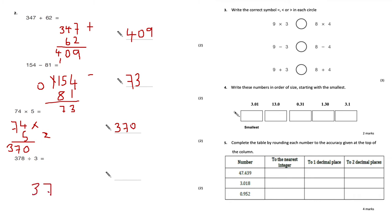Next: 378 divided by 3 using the bus stop method. 3s into 3 is 1 remainder 0; 3s into 7 is 2 remainder 1; 3s into 18 is 6. The final answer is 126.